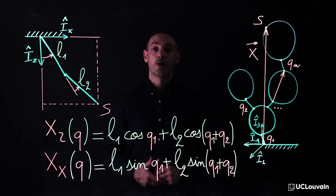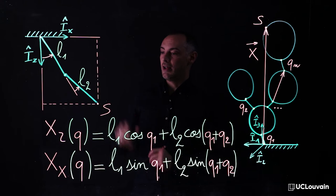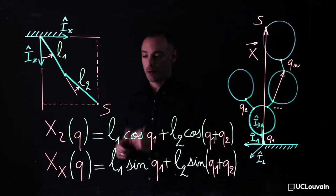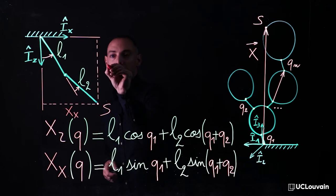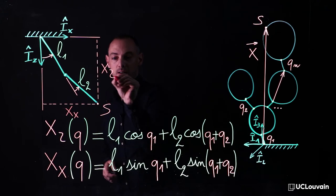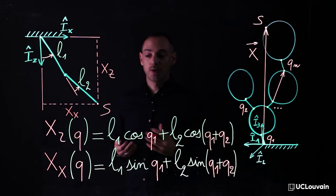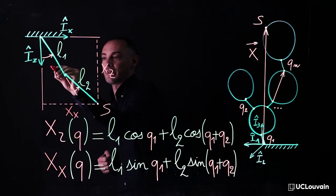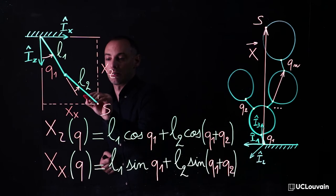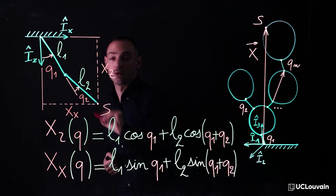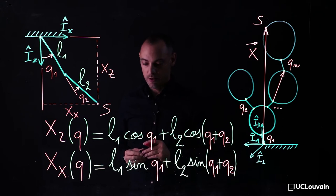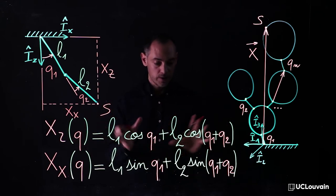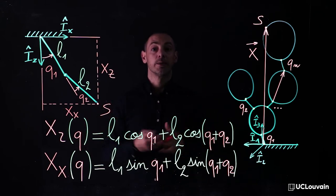For example, with a double pendulum, the absolute coordinates of point S, x, x and x, z, can be computed from the relative coordinates q1 and q2, knowing length l1 and l2. This provides the following equations of the direct kinematics.